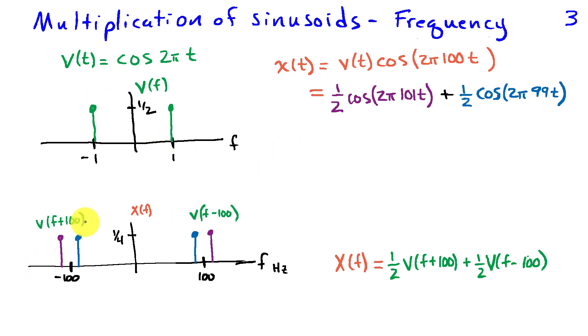I can write this as V of f minus 100. That's this graph shifted to the right by 100 hertz. And then I also have something at negative frequencies. I can express that as V of f plus 100 because that's V of f shifted to the left by 100 hertz. The math works out to write x of f as 1 half V of f plus 100 plus 1 half V of f minus 100.